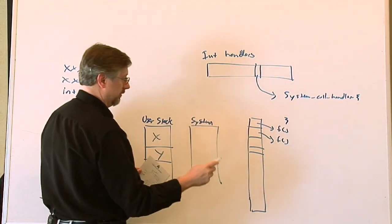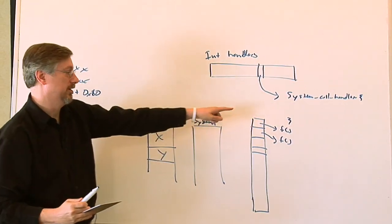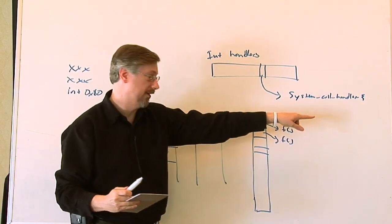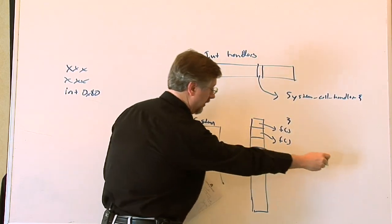This routine then will, based on the system call that is passed in - telling it I want system call one or five or whatever the number - get the address of the routine here and just jump into it.